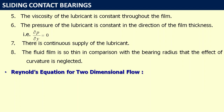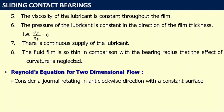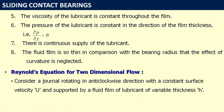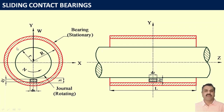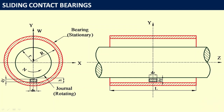Let us see the derivation of Reynolds equation for two-dimensional flow. Consider a journal rotating in anticlockwise direction with a constant surface velocity U, supported by a fluid film of lubricant having variable thickness h. The red part is the bearing and the black part is the journal rotating anticlockwise with speed n. In the annular space, lubricant is provided. For analysis, we consider a small portion of the lubricating film having length dx and height dy. h is the fluid film thickness between shaft and journal at this instant.